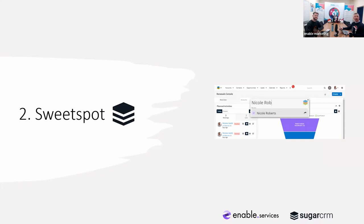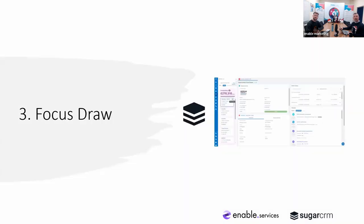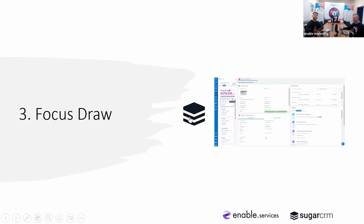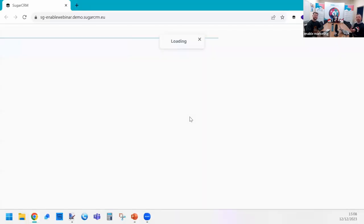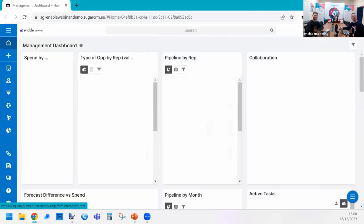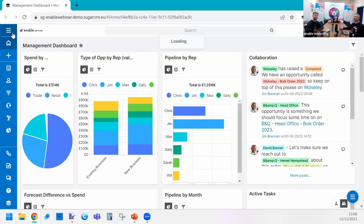Our next feature is Focus Drawer. Focus Drawer is a fairly new feature — it came in Sugar 13. What it does is provide a new view: normally when you go into a record inside Sugar you go into record card view where all the sub-panels are below, and it can feel a little old school. Focus Drawer gives you a dashboard-style view where you can drag and drop items and make it easy. We can have Focus Drawer on any module you like.